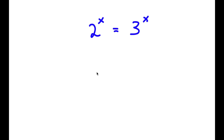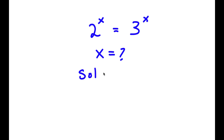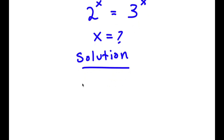In this problem, I have 2 to the power of x is equal to 3 to the power of x. I obviously want to find the value of x here. For my solution, I'm going to first start by writing 2 to the power of x is equal to 3 to the power of x.